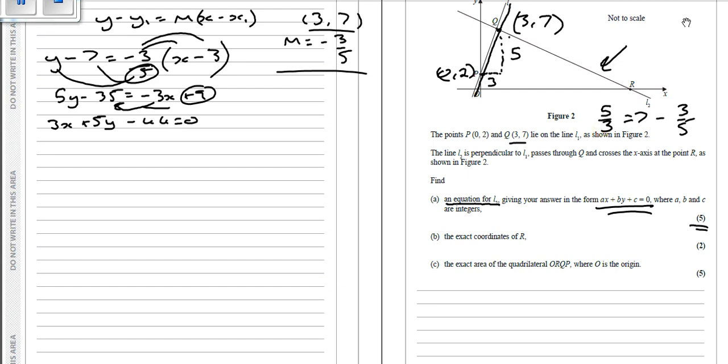So now what we've got to do is find the exact coordinates of r. So r is when it crosses the x-axis. Now when anything crosses the x-axis, the y value is 0. So what we're going to do is we've done part a here. Part b, we're going to make y equal 0.